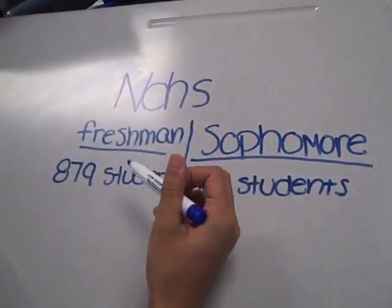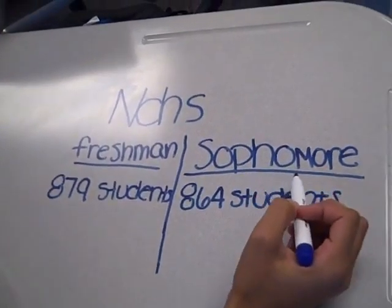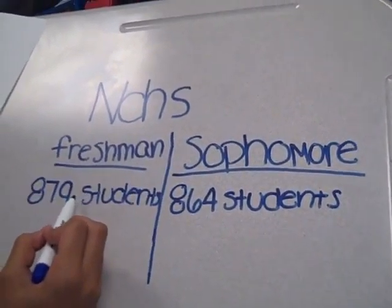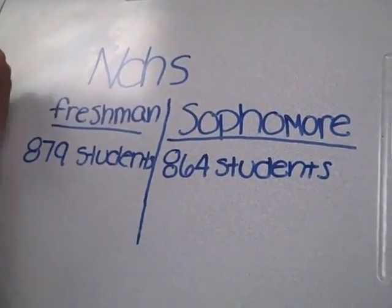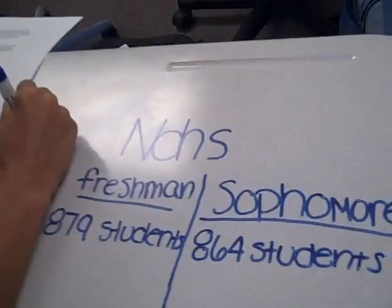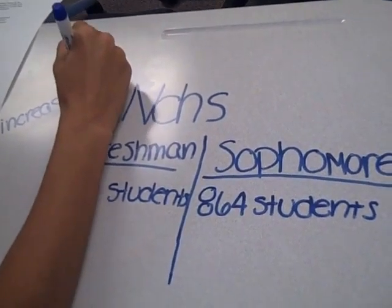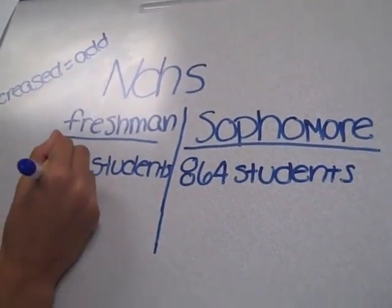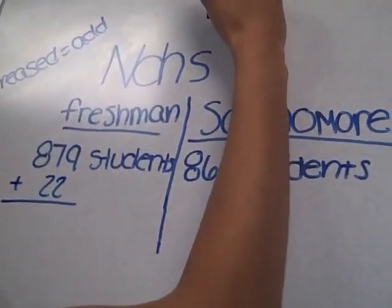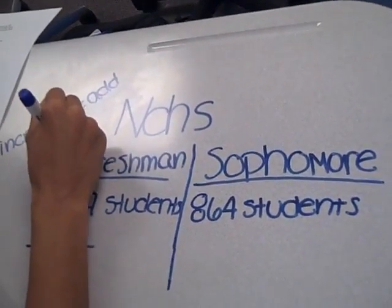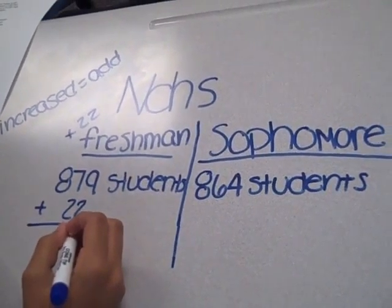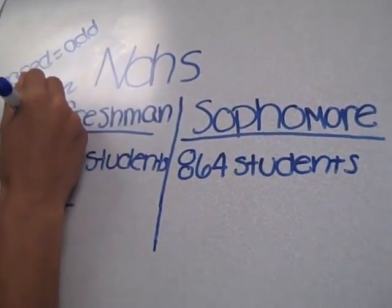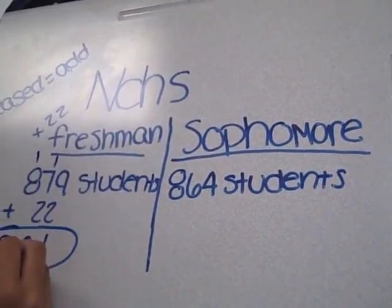So, for freshmen, there's 879 students, and for sophomores, there's 864 students. The freshmen students increase by 22 — increase equals add. So you add 879 plus 22, because freshmen in baseball, it's 22 students. So 879 plus 22 is 901 students.